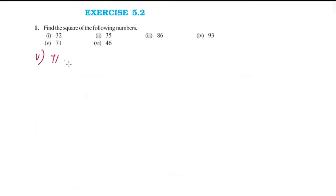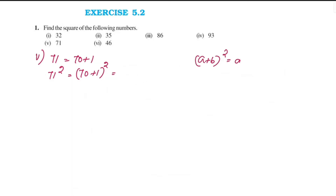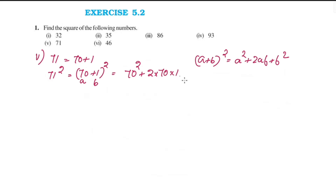Fifth question is 71. We write 71 as 70 plus 1. So 71 squared equals (70 + 1) whole square. Using (a + b)² = a² + 2ab + b², where a is 70 and b is 1. 70 squared is 4900, and 2ab is 2 × 70 × 1 = 140, plus 1 squared is 1.